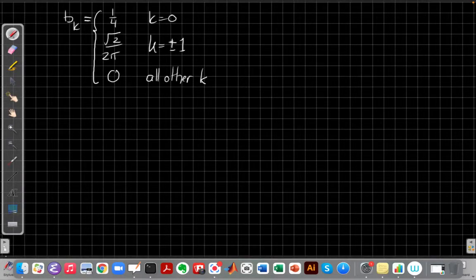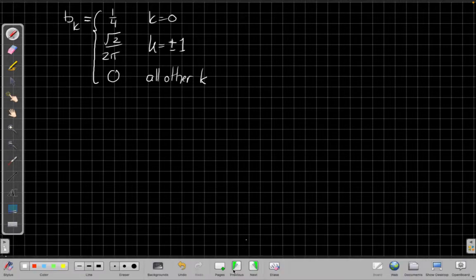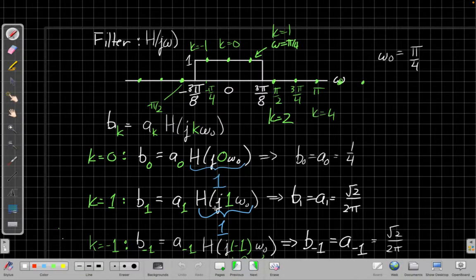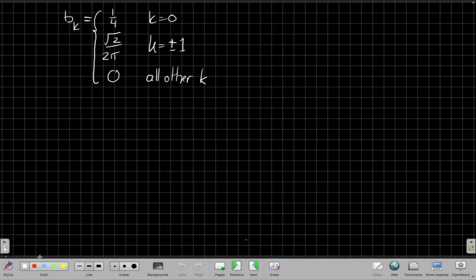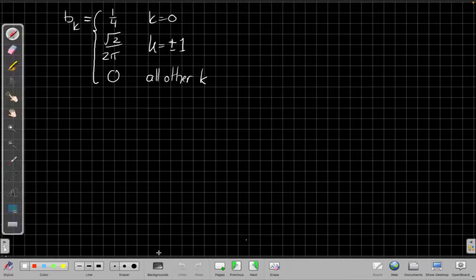In our last episode, our hero had found that b_k was equal to 1/4 for k equals 0, root 2 over 2π for k equals plus or minus 1, or 0 for all the other k's. This last term he had found was due to the exciting discovery that the filter was 0 outside of the passband, so all the harmonics from k equals 2 upwards or downwards were set equal to 0. Okay, enough with silly movie voice. We're on to step 3 here, though, in all seriousness...